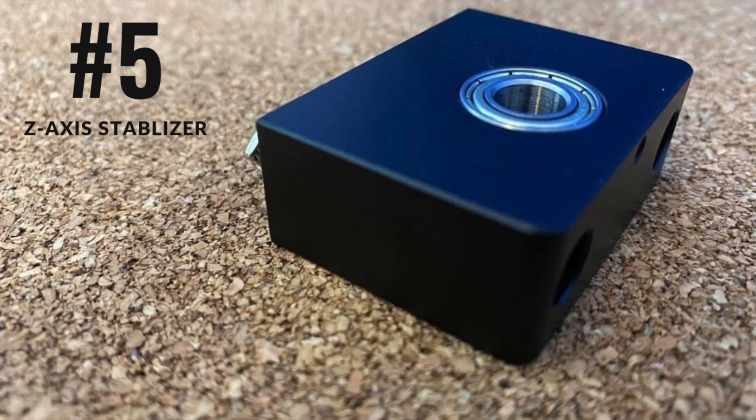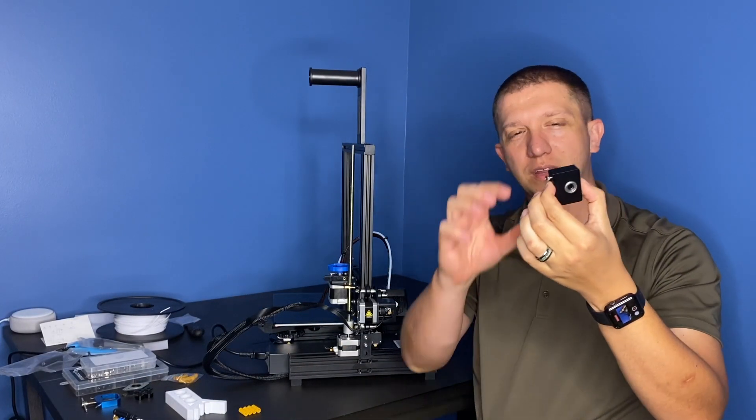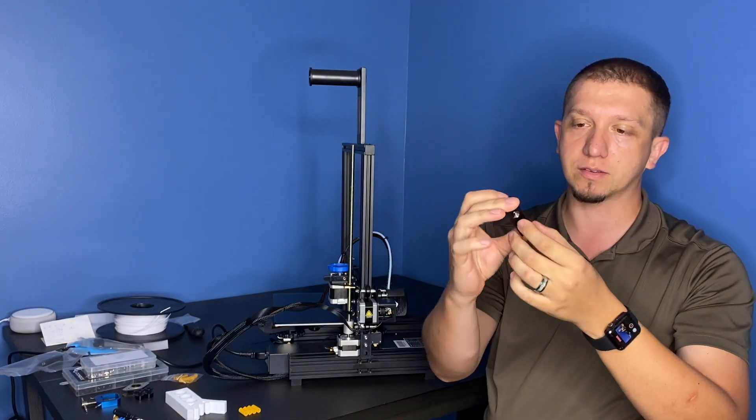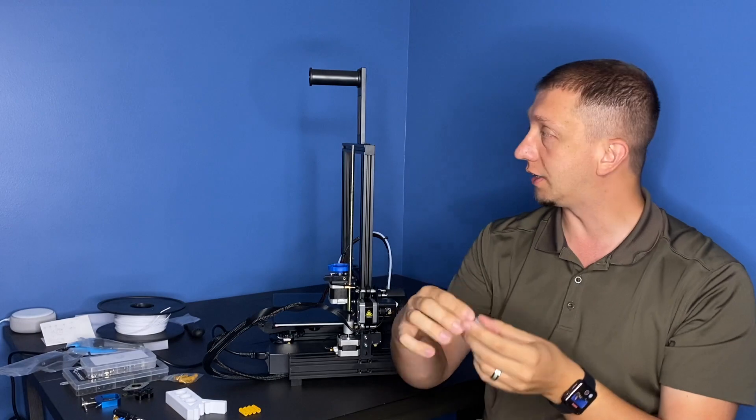Number five is the Z-Rod Stabilizer. This guy costs about 10 or 12 bucks on Amazon. Link down in the description. It's a relatively easy install.